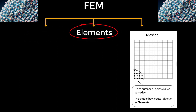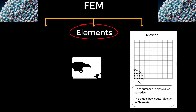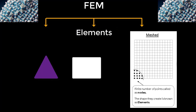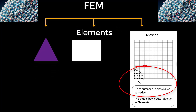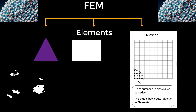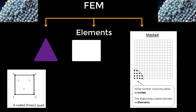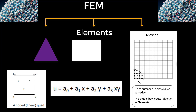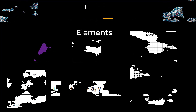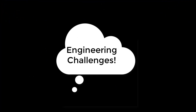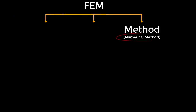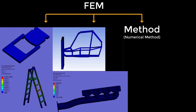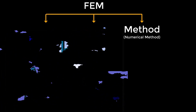At the heart of FEM are the elements — entities that connect nodes and form specific shapes like quadrilaterals or triangles. Calculations are concentrated at these nodes. To understand variables like displacement within these elements, we use interpolation functions tailored to the shape of the element. FEM falls under the numerical methods category and is a powerful tool that provides precise simulations, helping engineers predict how designs will perform under real-world conditions.